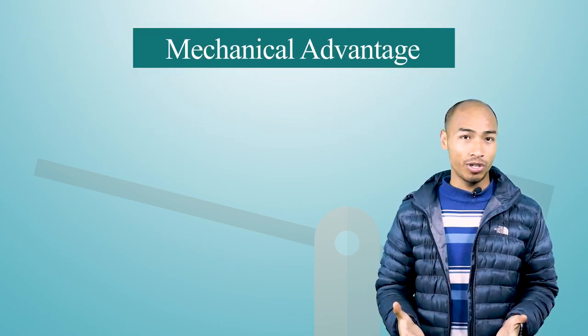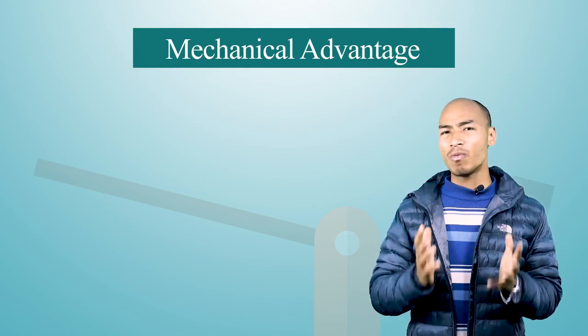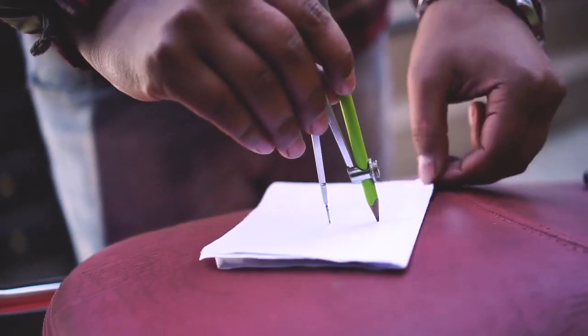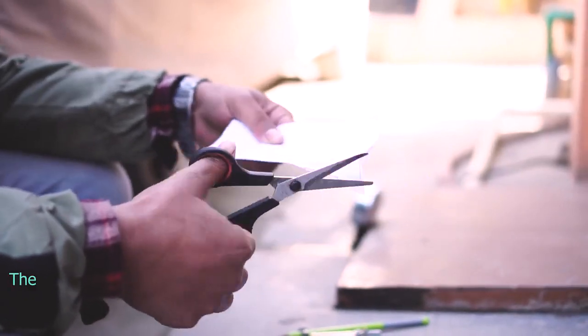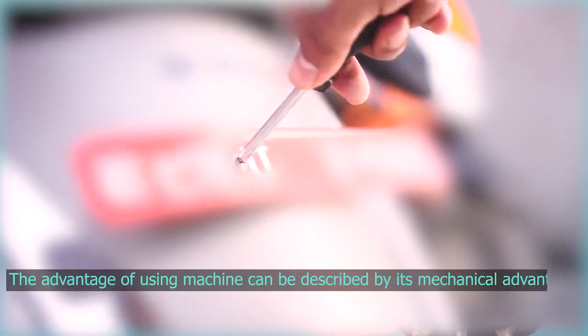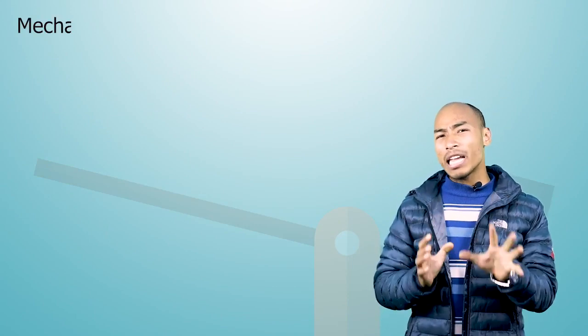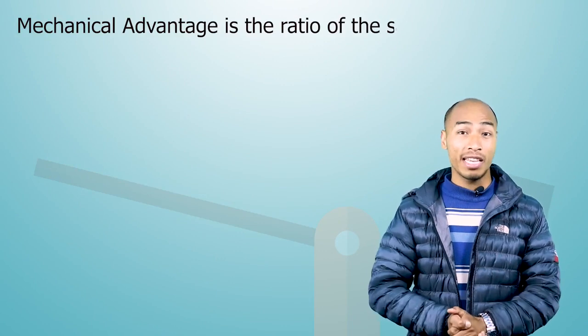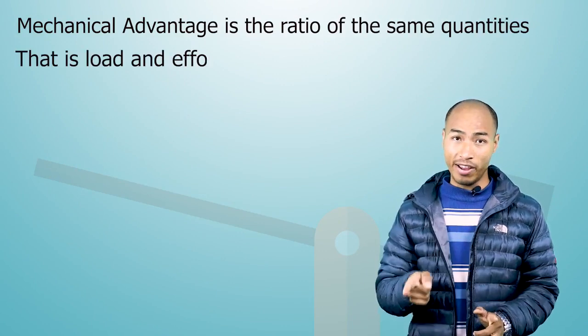Now mechanical advantage. As of now, you've already known different advantages of using simple machines. But in terms of physics, the advantage of using a machine can be described by its mechanical advantage. It defines how much faster and easier the work done in moving the load by the machine. Simply, mechanical advantage is the ratio of same quantities that is load and effort.